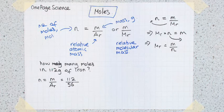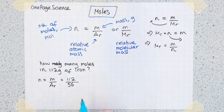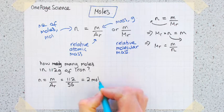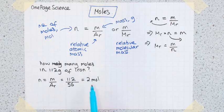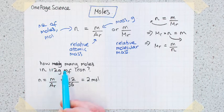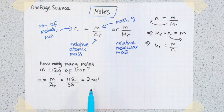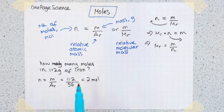You then grab your calculator - always use a calculator for this. This is an easy one you could do in your head, but always do it with your calculator just in case. 112 divided by 56 equals 2 moles. So if I've got 112 grams of iron, then I've got 2 moles worth of iron. This is the amount of mass, this is a measure of how many particles of iron I've got.